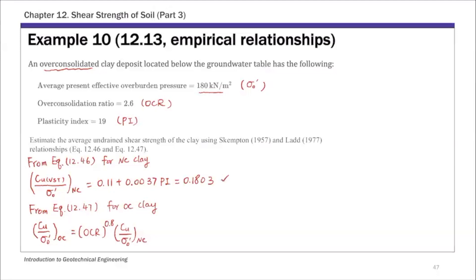It's this expression. So from this, you can calculate the undrained shear strength of this OC clay. OCR is 2.6 to the power 0.8. And Cu over sigma nought prime for NC is 0.1803, then times overburden pressure 180. So that gives you the undrained shear strength for this overconsolidated clay deposit: 69.7 kN/m².